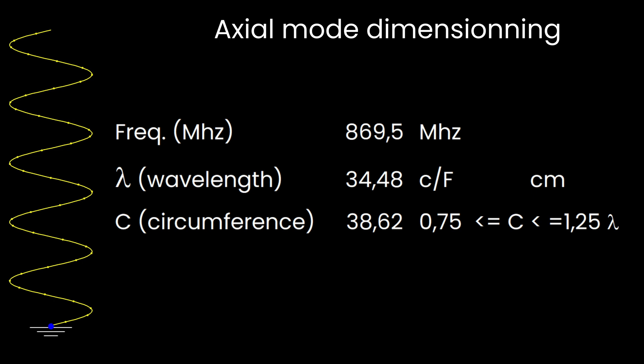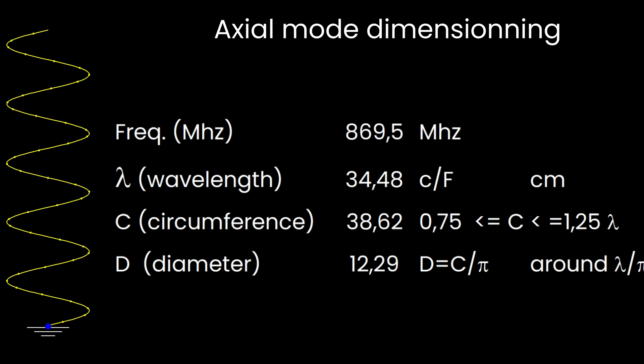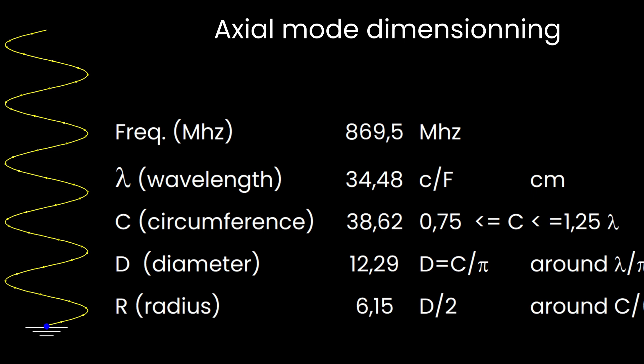C, the circumference in our case, is then the first parameter that we shall define. We will choose here for the exercise 1.12, the wavelength, which is in dimension 38.62 centimeters or 0.3862 meters. From C, the diameter of the antenna is defined by the formula C equals D times pi. Pi is the constant, obviously, which gives then a diameter of 12.3 centimeters or a radius of 6.15 centimeters.